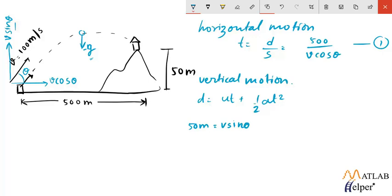t can be substituted from the first equation which is 500 upon v cos theta. And our acceleration is minus g.